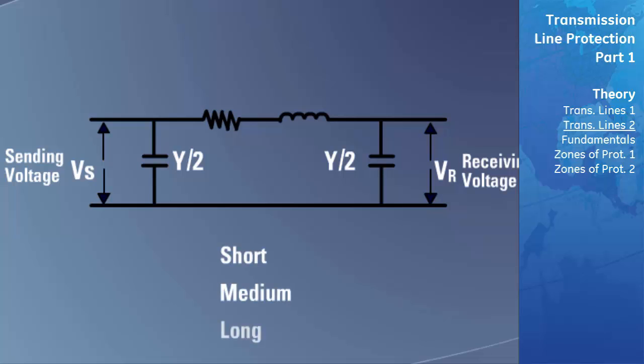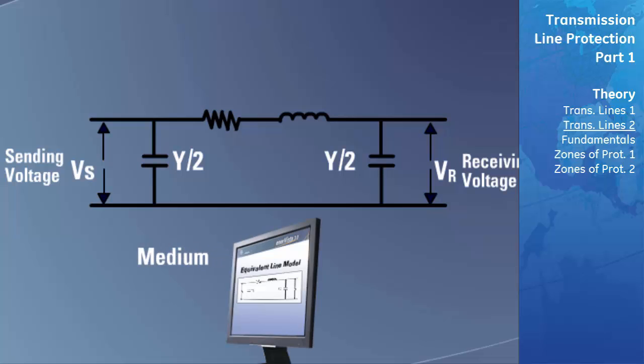The PI model shown here was historically used by the protection engineer to represent medium length lines. However, by using this representation of the line in addition to computer-aided software now readily available, the protection engineer can accurately calculate all required values for both medium and long transmission lines. This data simplifies the protection engineer's task in performing fault calculations to set up the distance protection within a relay.